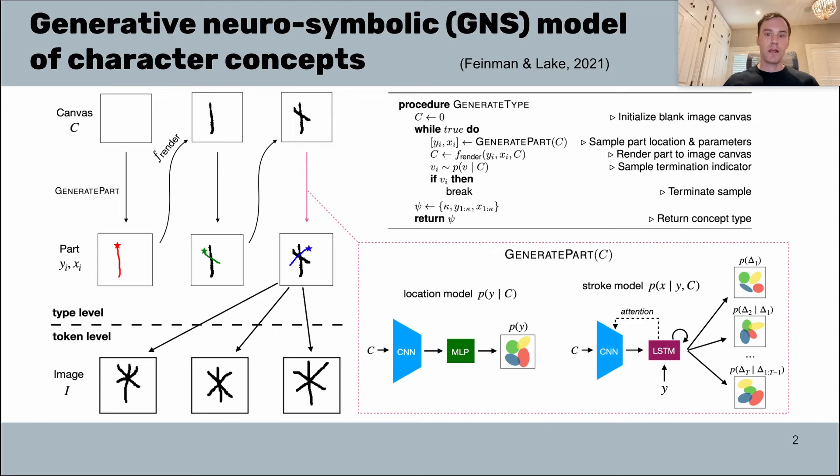An additional token level model describes how to generate different examples of character type by adding variability through things like motor noise, affine transformations, and other variations. As you can see, I've visualized this by showing three different instances of this particular character that might be sampled from the token level conditioned on a particular character type.